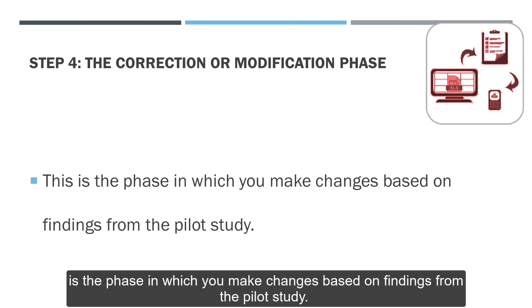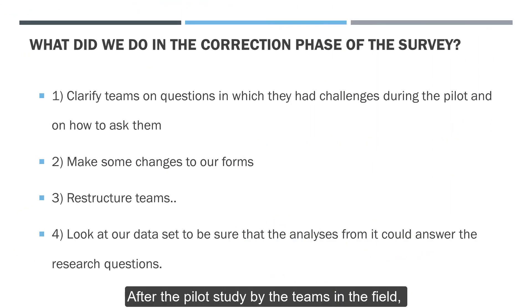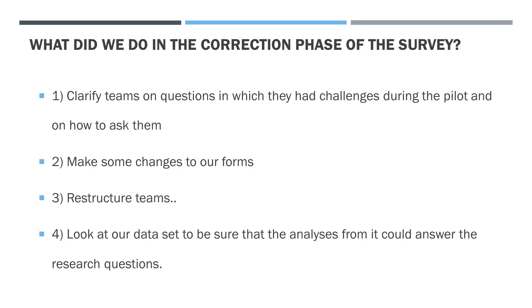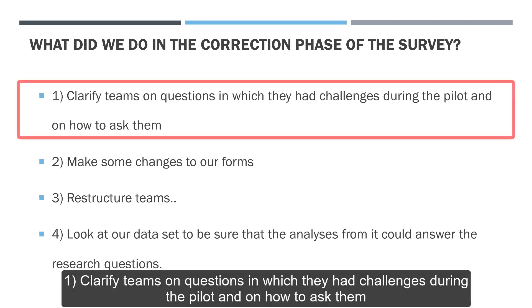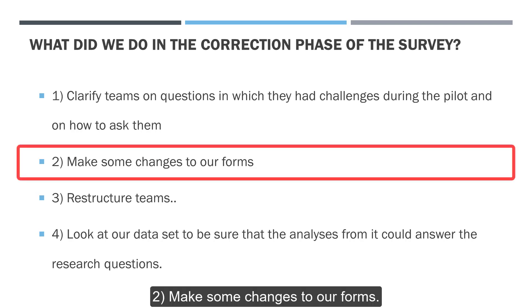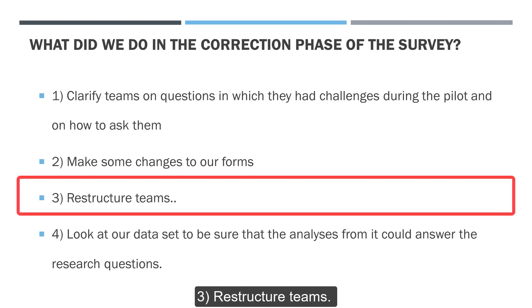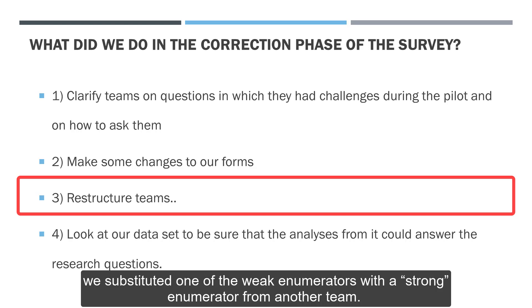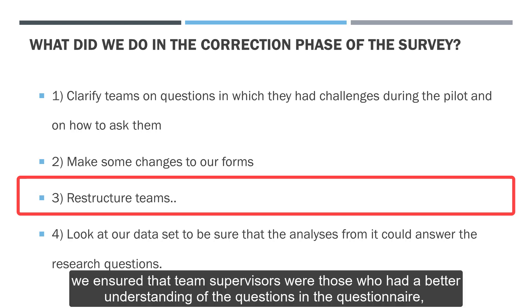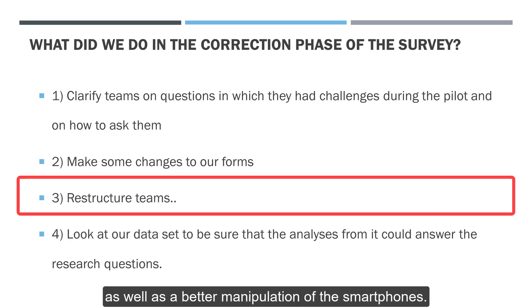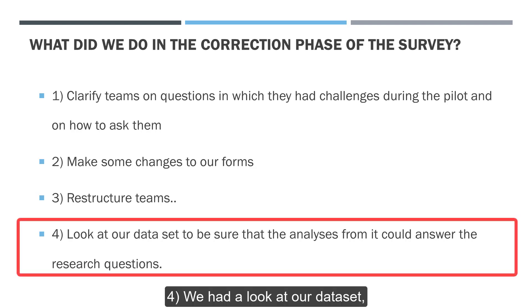The correction or modification phase is the phase in which you make changes based on findings from the pilot study. After the pilot study, we had a debriefing session where each team was asked to present their challenges in using the tools. This permitted us to: clarify teams on questions where they had challenges during the pilot; make some changes to our forms; and restructure teams — in teams where both enumerators were weak, we substituted one weak enumerator with a strong one from another team. We also ensured that team supervisors were those who had a better understanding of the questionnaire and better manipulation of the smartphones. We also reviewed our datasets to be sure the analysis could answer the research questions.